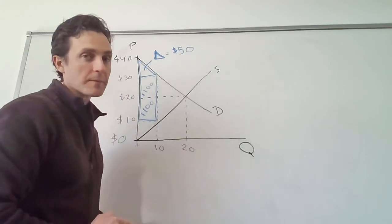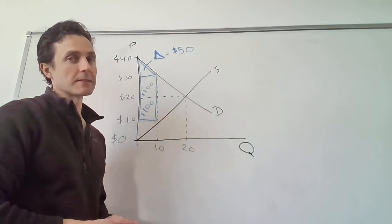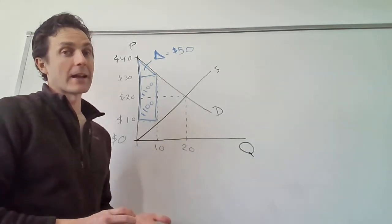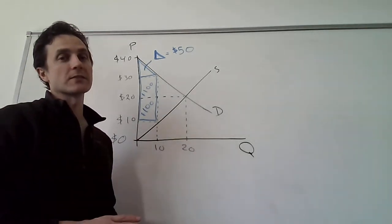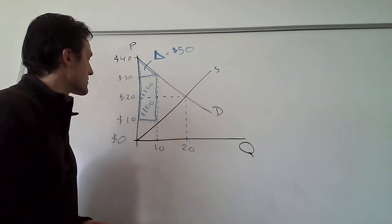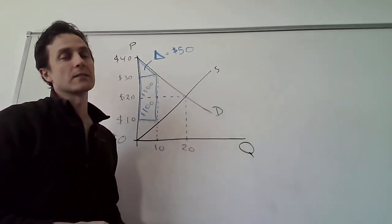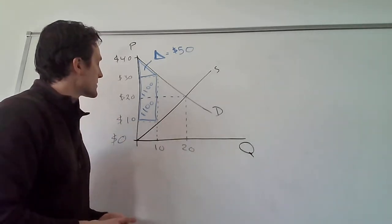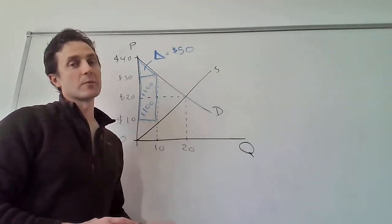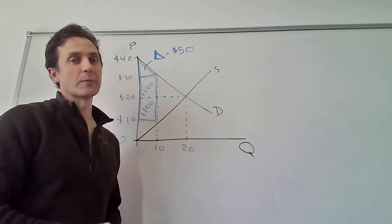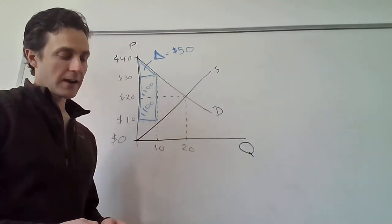In this market there happens to be a $10 price ceiling, which means the price can't go above $10. That equilibrium price of $20 would actually be illegal. Prices will want to rise but get stuck at $10, so this is a binding price ceiling — and $10 will be the actual price in the market.